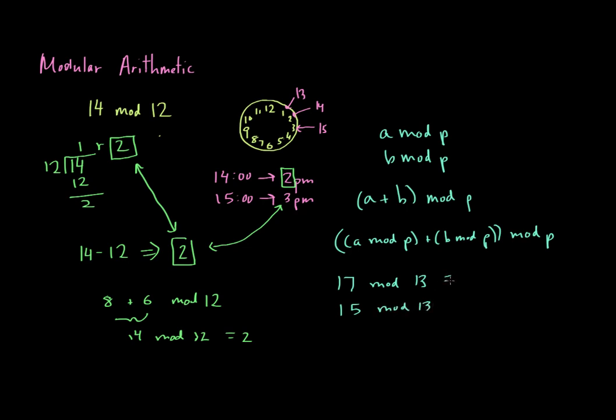Well, we know 17 mod 13 is the same as 17 minus 13, which is 4. So if you went on a 13-hour clock, you'd end up at 4 if you cycled back. And 15 mod 13 would be equal to 2. And now let's think about that. What is 17 plus 15 mod 13? Well, that's the same as saying 32 mod 13.